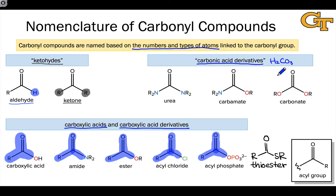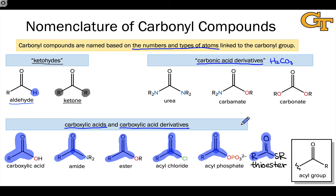A carbamate contains an NR2 group and an OR group linked to a carbonyl carbon, and a carbonate contains two alkoxy groups linked to a carbonyl carbon. Notice that the carbonate is very similar to carbonic acid, with R groups replacing the hydrogens. Carbonic acid derivatives have the same oxidation level as carbonic acid and are in some ways similar to carbon dioxide, which also contains two bonds to a heteroatom. This slide summarizes the full extent of what we'll discuss regarding carbonyl compound nomenclature, with the most important distinction being between ketohydes, carboxylic acid derivatives, and carbonic acid derivatives.